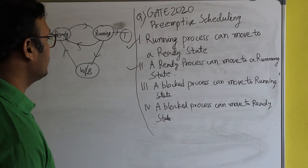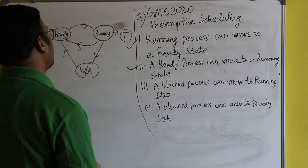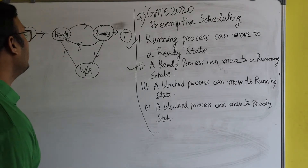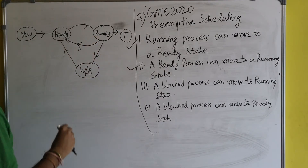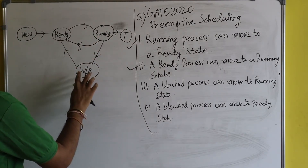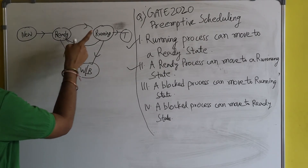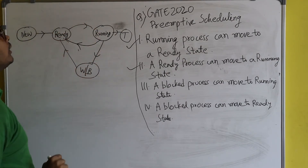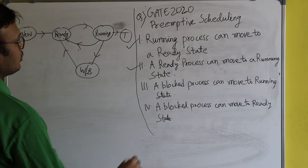Option three: a blocked process can move to a running state — no, this is not correct. There is no direct transition from the wait/block state to the running state. In order to move to the running state, a blocked process must first go to the ready state, after which the CPU can be allocated to that process. So option three is incorrect.